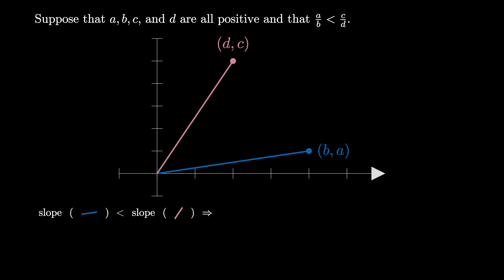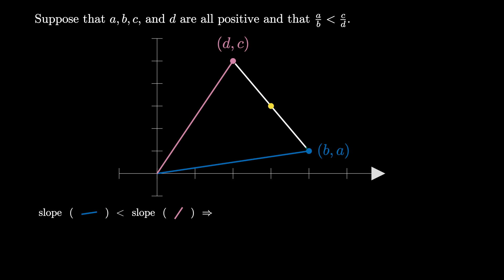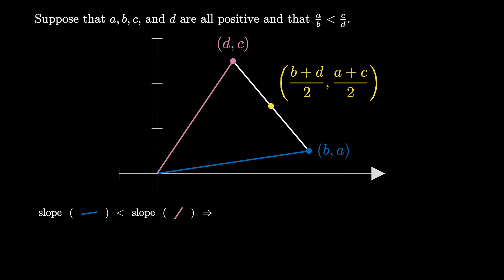Let's connect the points (B, A) and (D, C) with a line and then highlight the midpoint between these two points. The x-coordinate of this midpoint is halfway between B and D, and the y-coordinate of this point is halfway between A and C. So the coordinates of this point are given by ((B plus D) over 2, (A plus C) over 2).